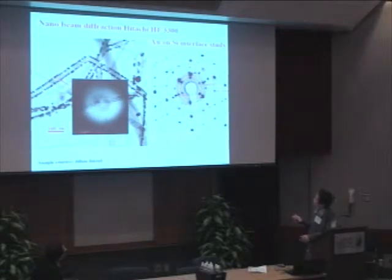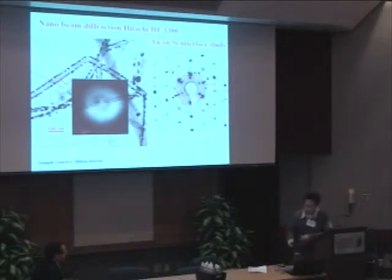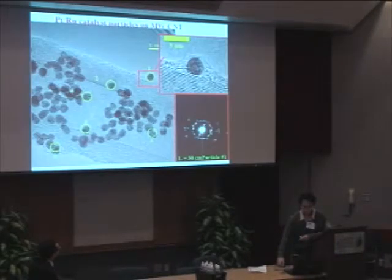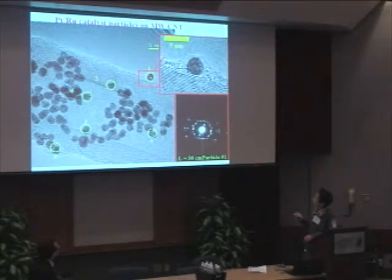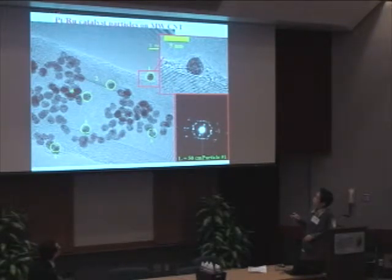Here is a result from the interface between a gold particle and a silicon nanowire. By indexing the diffraction pattern you are able to identify the phases — they actually found a new phase other than just silicon and gold. There is another example where nanobeam diffraction was performed on a single ion particle embedded in silicon oxide. For catalyst particles of about three or four nanometers, you can get a diffraction pattern to determine whether you have a single phase, or even reveal a new phase.